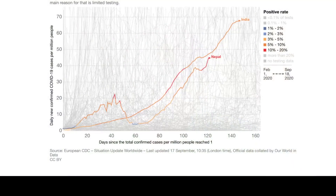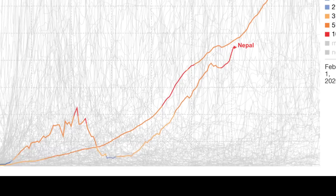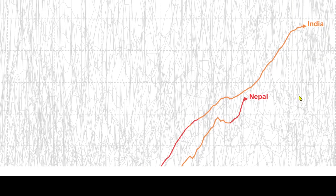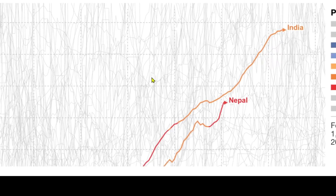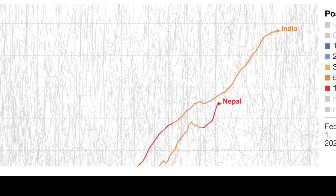Now I'm just going to finish on Nepal, which has been a concern actually. This is the per capita data, because India of course has got a much bigger population than Nepal. So we see India is increasing, but Nepal doesn't appear to be so bad. But the testing in India is really progressing remarkably well, whereas the testing in Nepal is minimal.